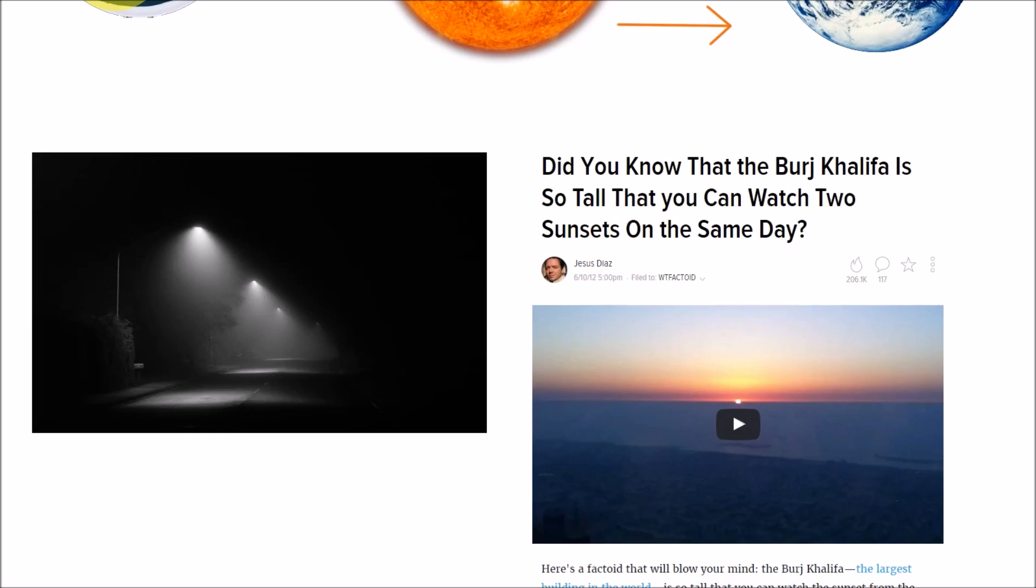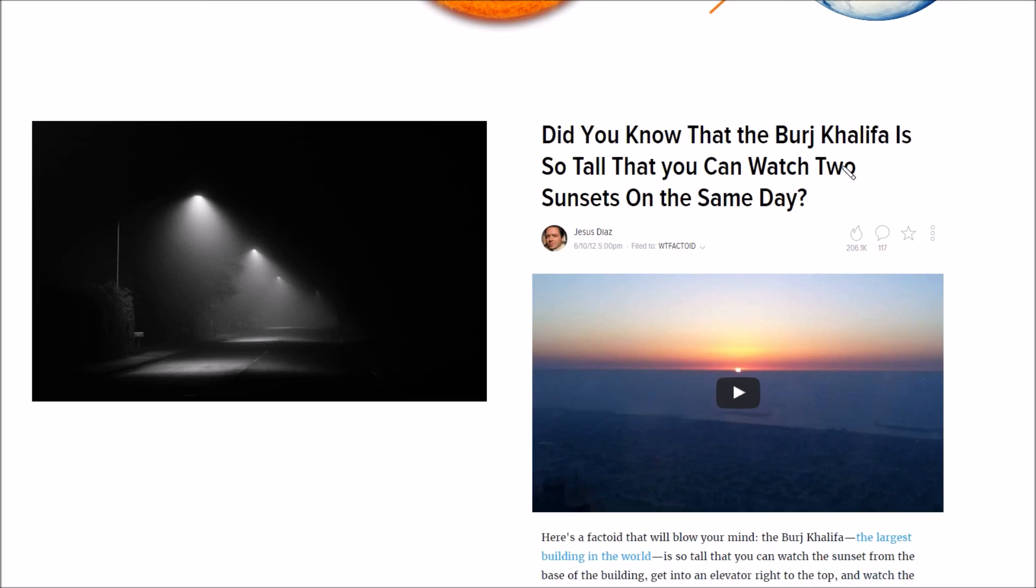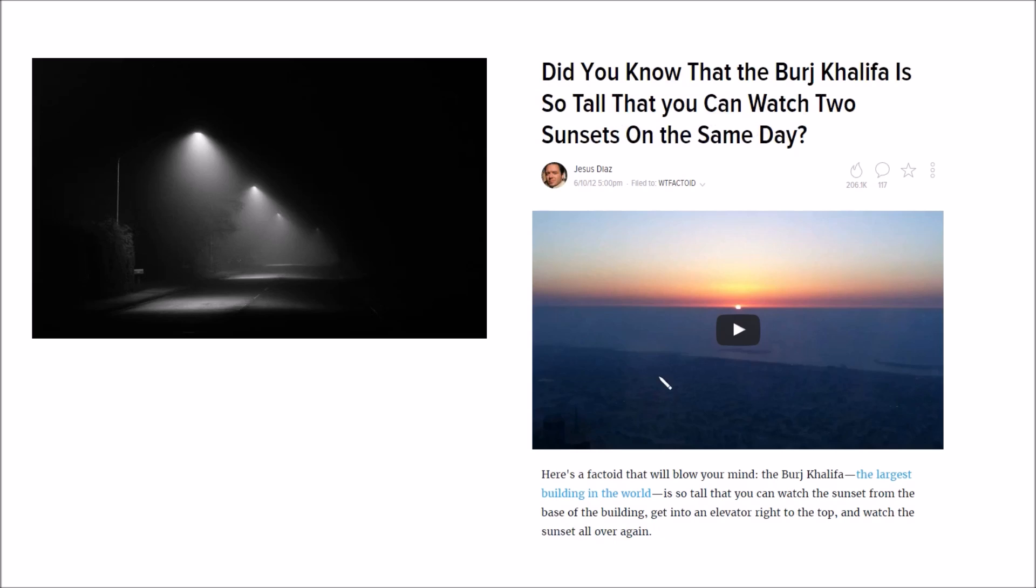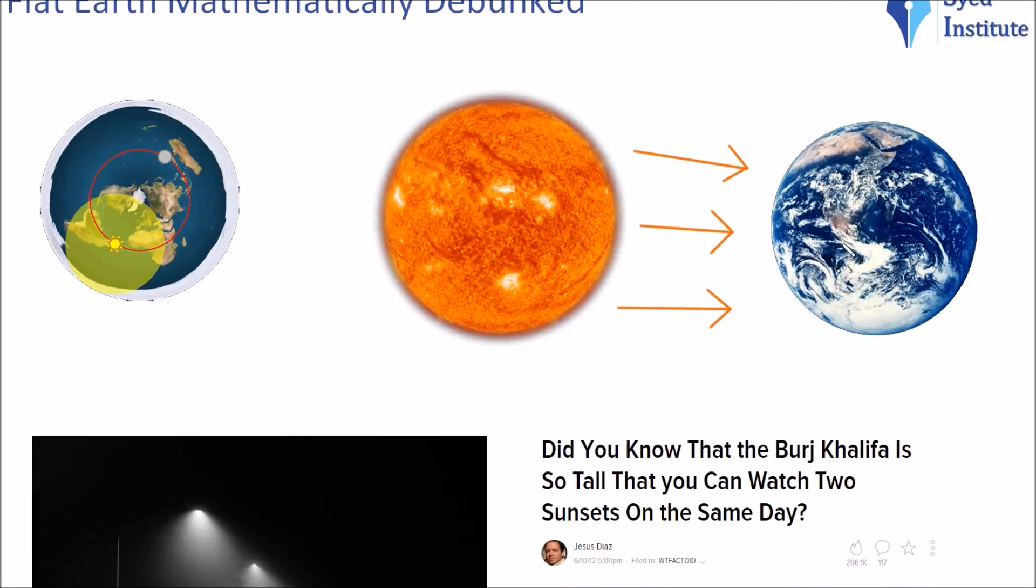Number two, we know the Sun actually sets because we can witness two sunsets from the same spot. The Burj Khalifa is the tallest structure in the world and you can witness two sunsets if you witness the first one and then get an escalator to the top you can see another one. This is further proof that the localized lighting is complete nonsense. You can read up on this—there are a lot of articles on the internet.